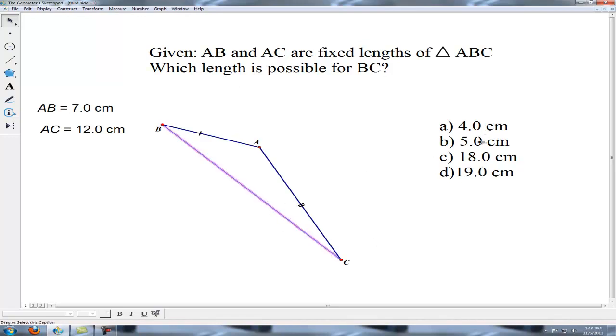We have four choices: 4, 5, 18, or 19. I want to examine just first visually the possibilities. I can see by swinging point B around like this we are creating a smaller and smaller measure for BC and then there's a location where the points are collinear where we reach a minimum.